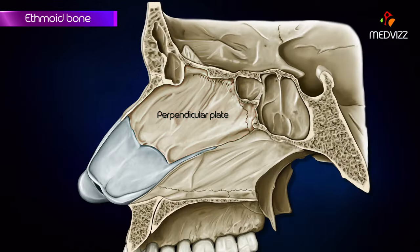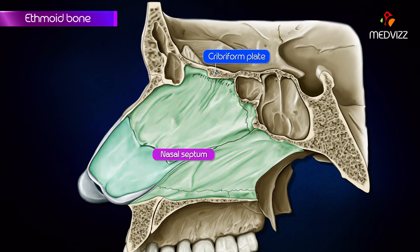The perpendicular plate is a quadrilateral plate which projects downwards from the inferior surface of the cribriform plate. It forms the upper part of the nasal septum.